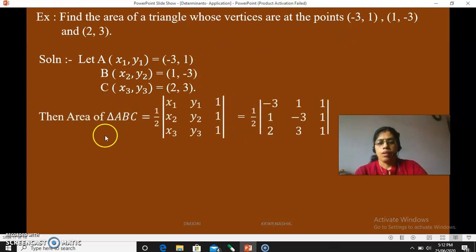Then substitute those x1, y1, x2, y2, and x3, y3 into the formula. Do write formula, half into the determinant with the columns x1, y1, x2, y2, x3, y3. So first column, second column and just you have to put the values there. So your first column is -3, 1, 2, x coordinates. Second column is 1, -3, 3. And the third column, 1, 1, 1.